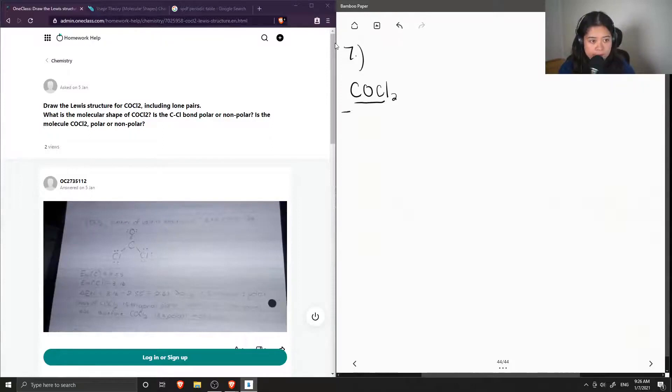Okay, so first let's calculate the total valence electrons in the molecule, and this will help us draw out the Lewis structure.